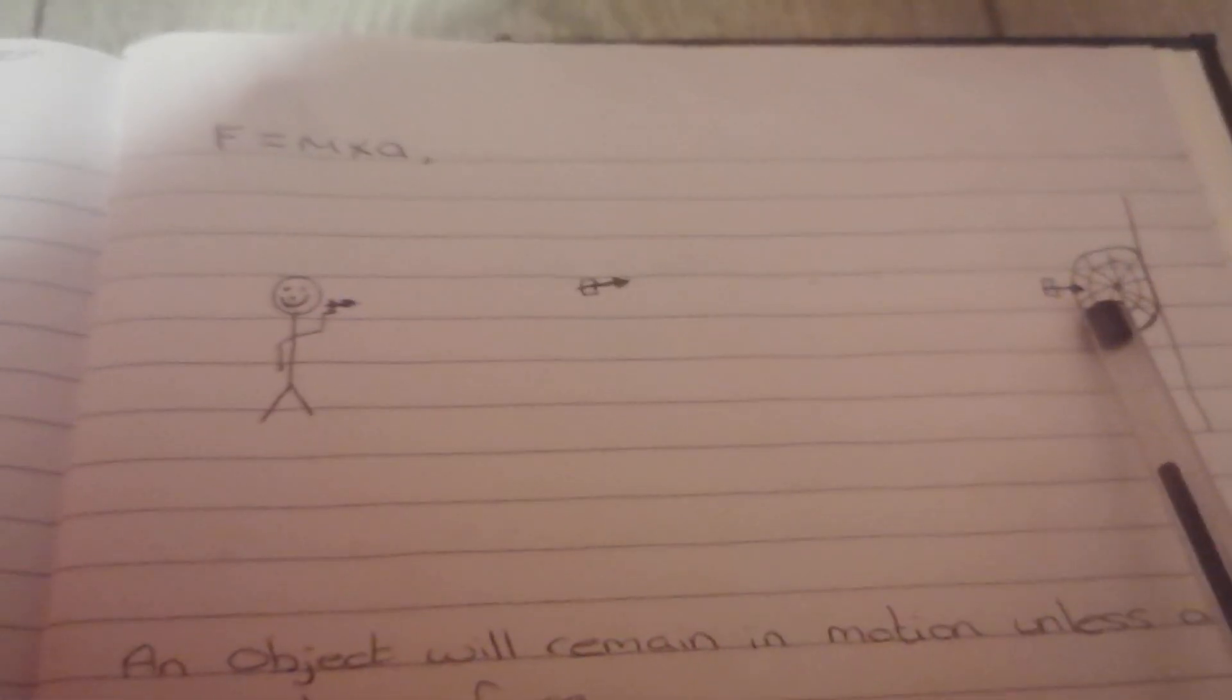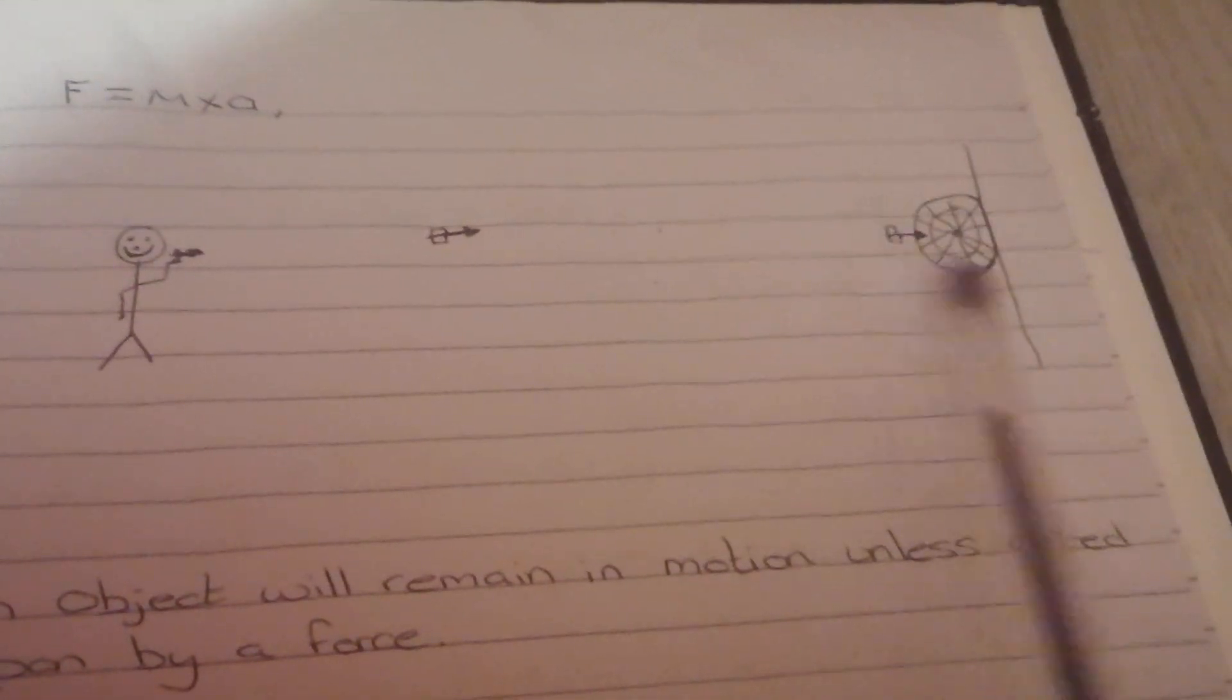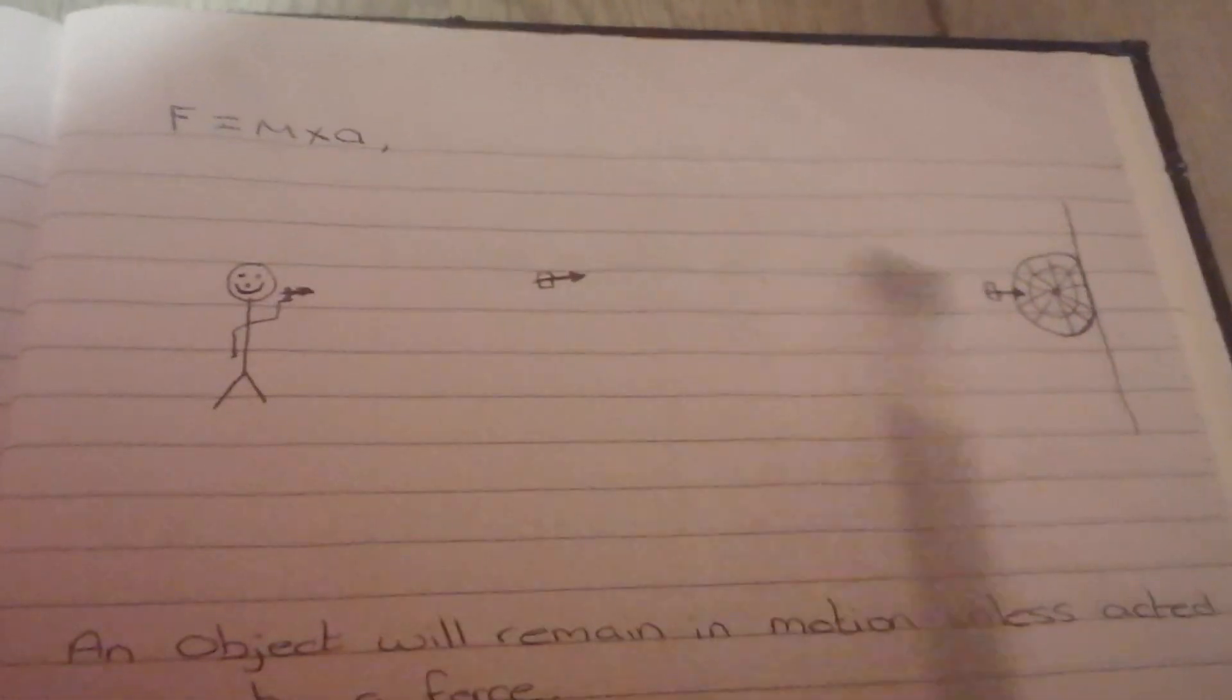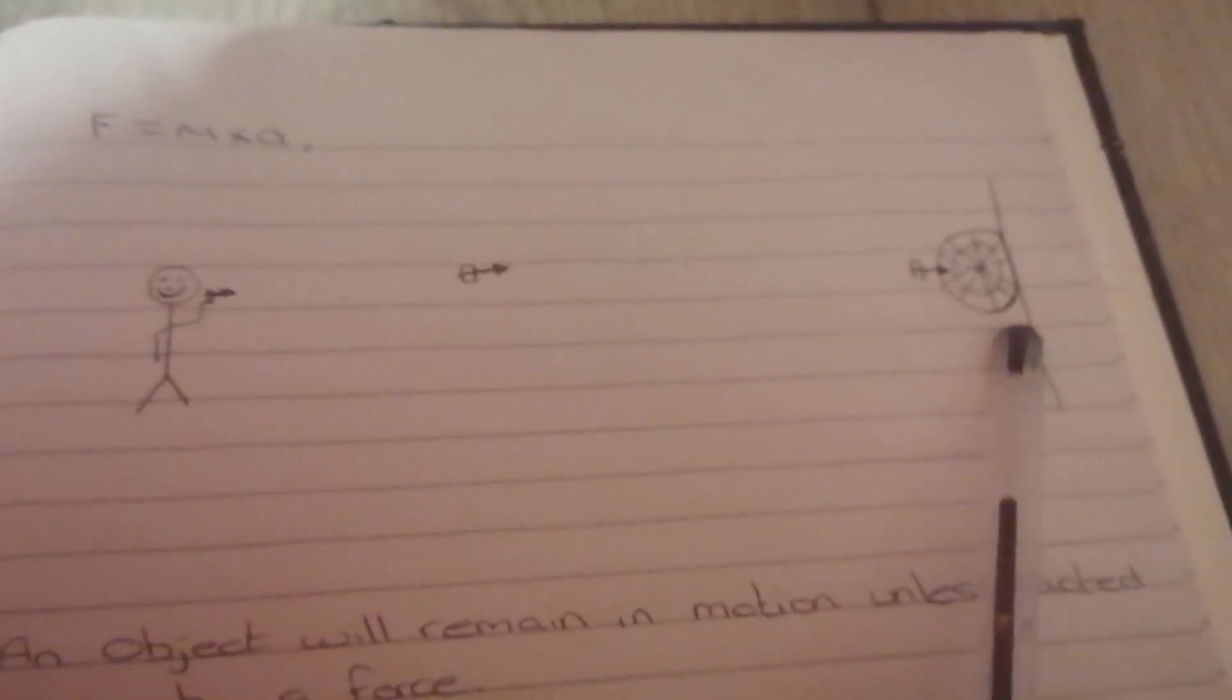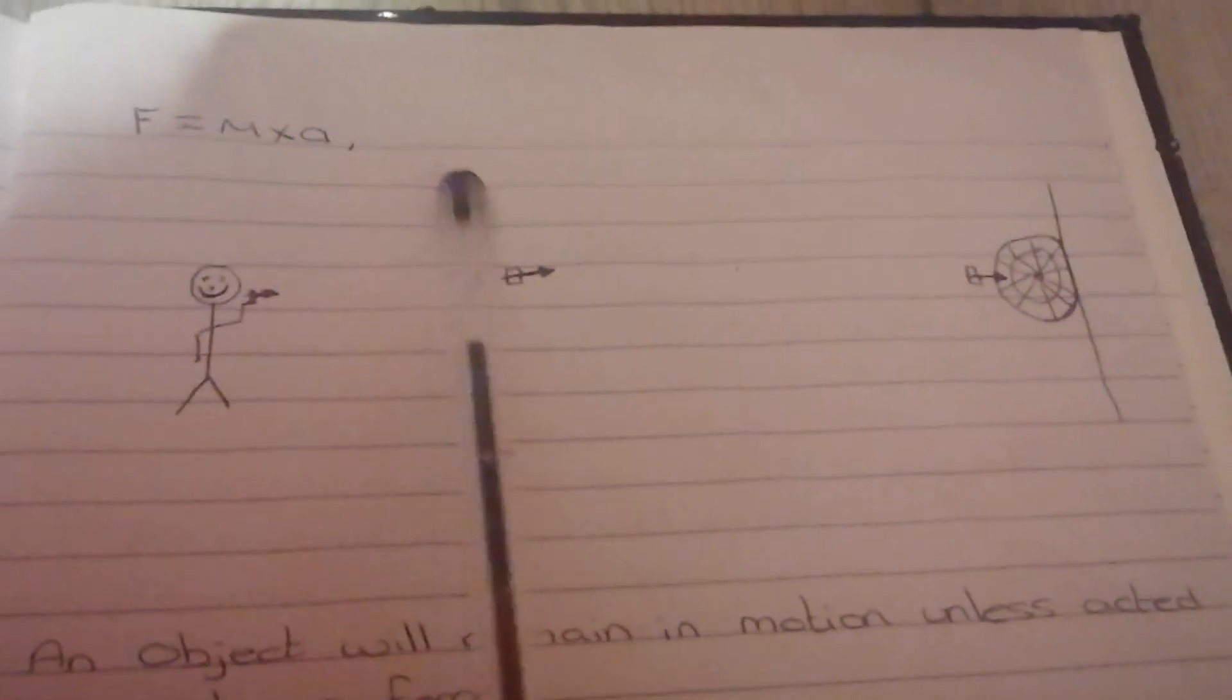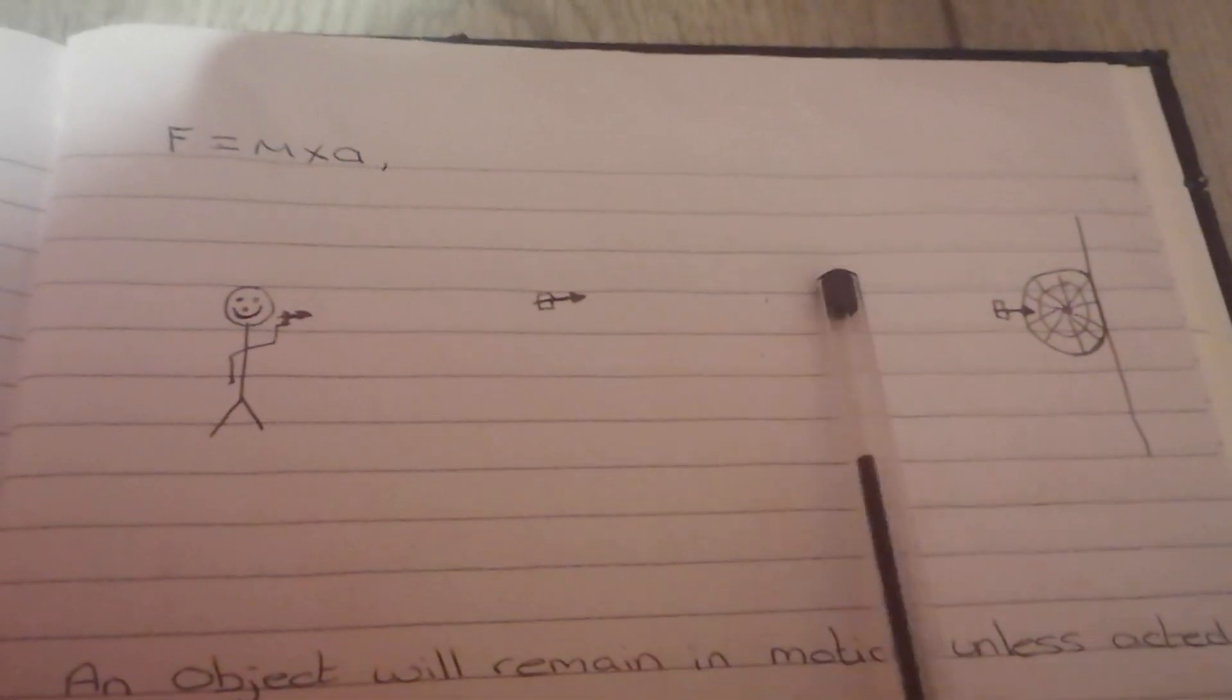In order for there to be a force there must be mass times acceleration. There's no mass times acceleration here. There's mass here, but there's no acceleration here, therefore there's no force here. But Newton's law says an object will remain in motion unless acted upon by force. Well this didn't remain in motion and there can't be a force because if F equals M times A, there's no acceleration here, therefore there's no force here and it did not remain in motion.